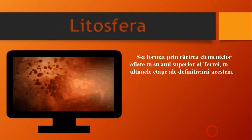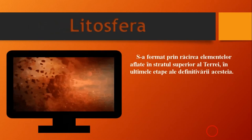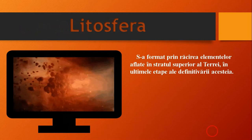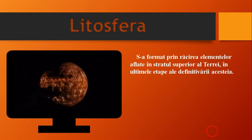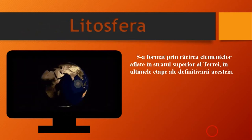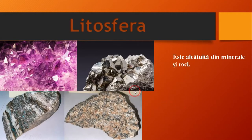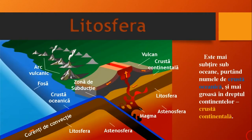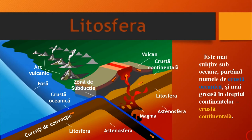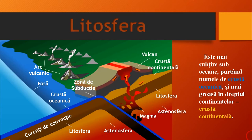S-a format prin răcirea elementelor aflate în stratul superior al Terei în ultimele etape ale definitivării acesteia. Este alcătuită din minerale și roci. Este mai subțire suboceane, purtând numele de crustă oceanică, și mai groasă în dreptul continentelor, purtând numele de crustă continentală.